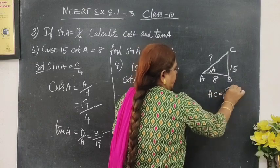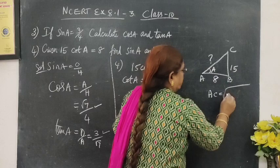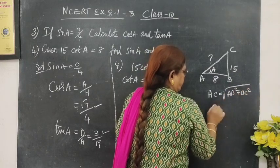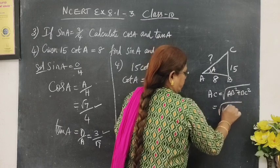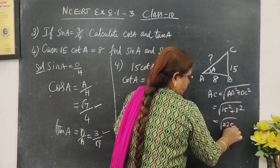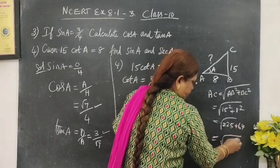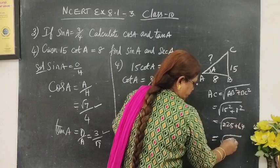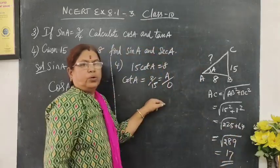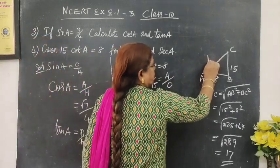AC equal to, hypotenuse means plus. Other side means minus. So AB square plus BC square. Let it be 15 square, 8 square, 225, 64. So 5 plus 4, 9, 8, 2. So 17, 17 squared is 289. So hypotenuse is 17.